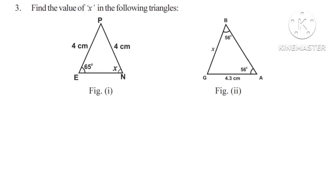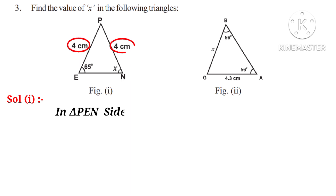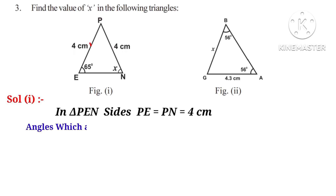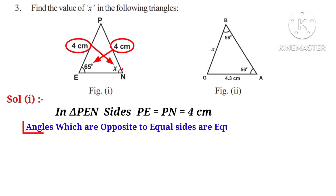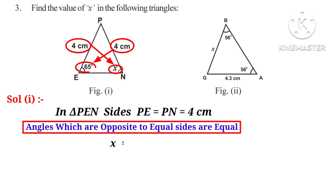Number 3: find the value of X in the following triangles. Solution 1: in triangle PEN, observe that the two sides PE and PN are equal in length at 4 cm. Angles which are opposite to equal sides are equal. So from the figure, we can say that angle N is equal to X, which is equal to 65 degrees.